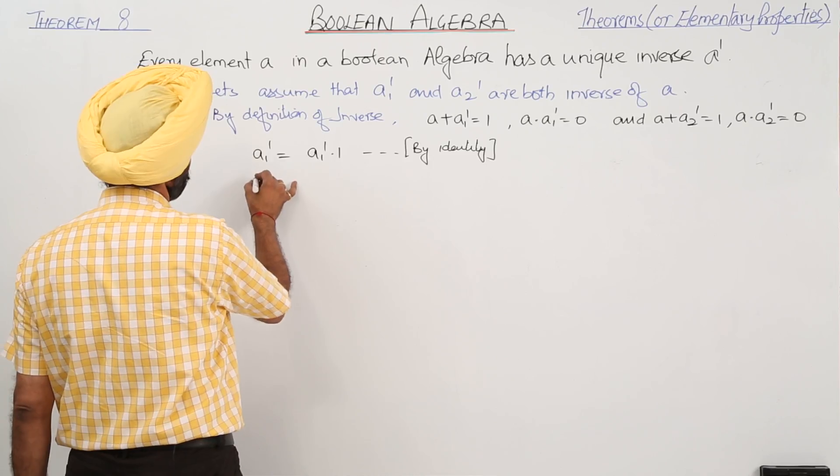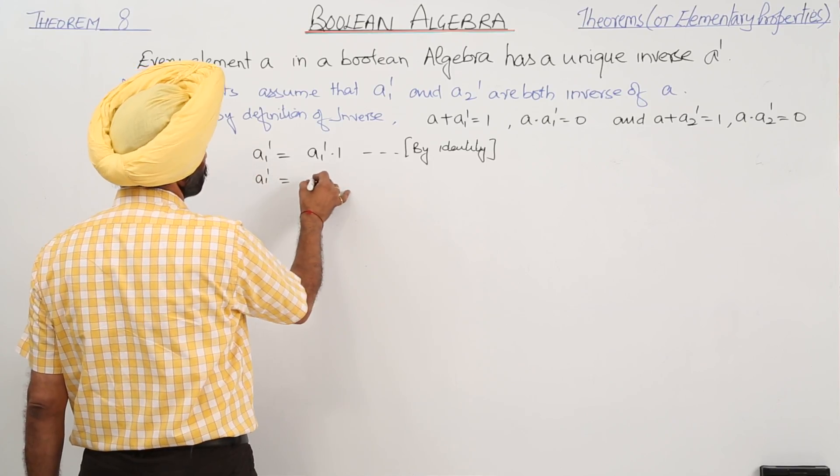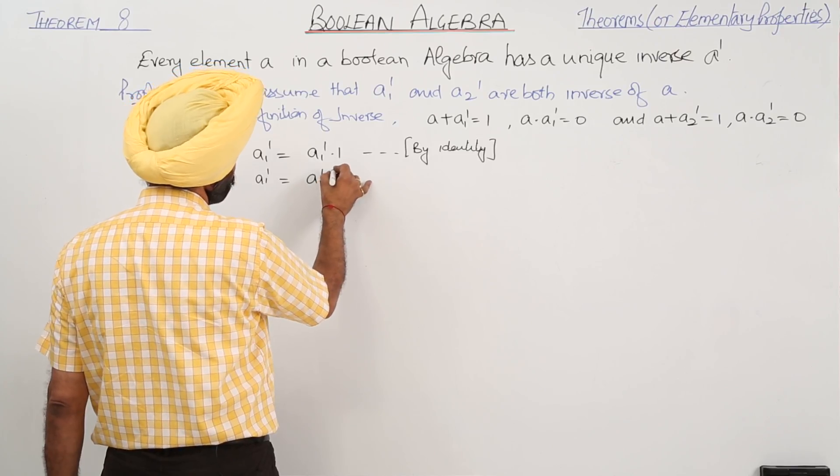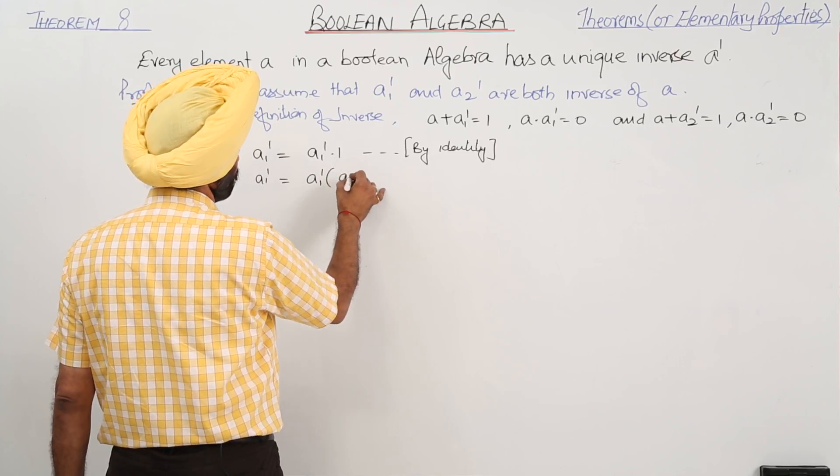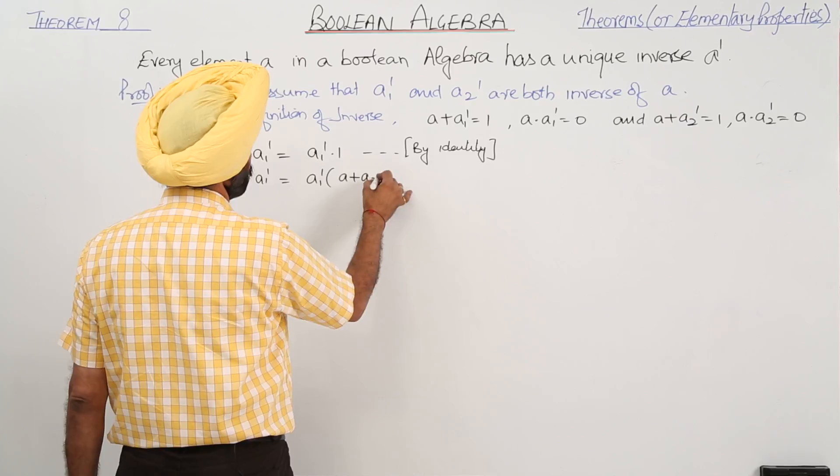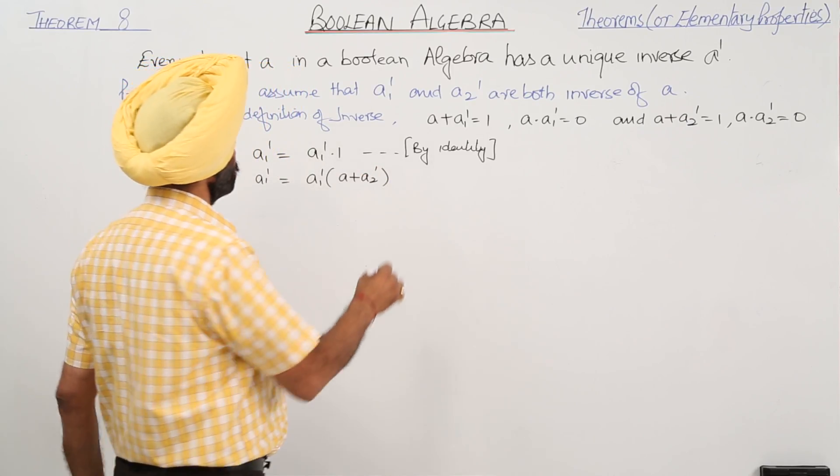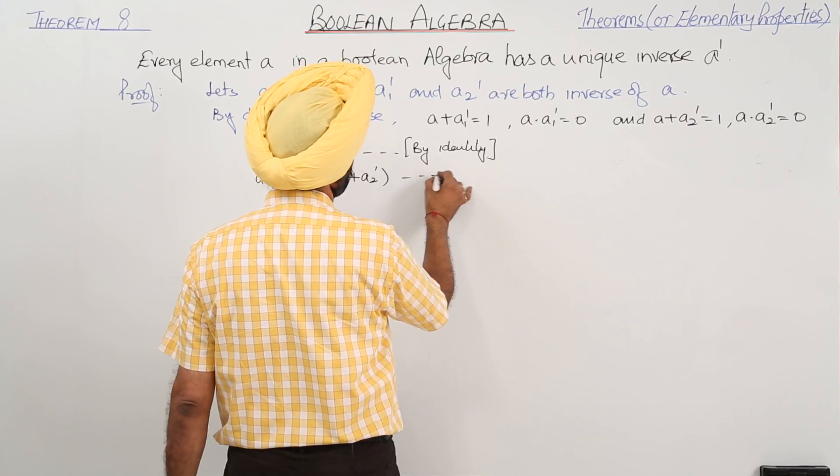then A1 inverse can be written as A1 inverse in the bracket A plus A2 inverse. To 1 we can write this one A plus A2 inverse. Now, what is this?